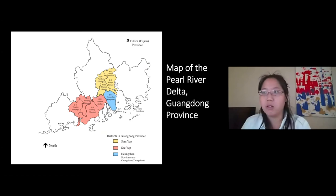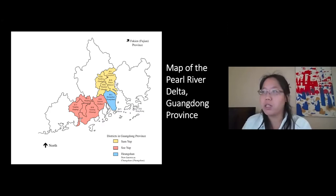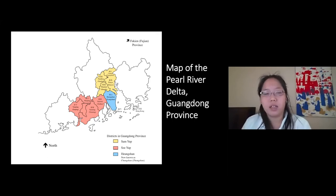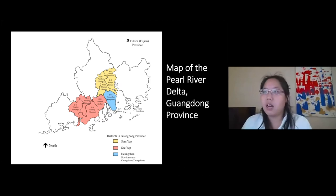The increased migration out of China was not solely due to these circumstances — Chinese people in this region have a tradition of going abroad for opportunities. That scale of migration expanded from Southeast Asia to a much larger global scale that included the Americas, New Zealand, Australia, and other countries. Most Chinese immigrants came from the Pearl Delta region, which consisted of Sam Yup, Sze Yup, and Zhongshan districts.